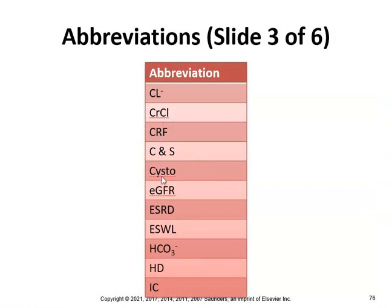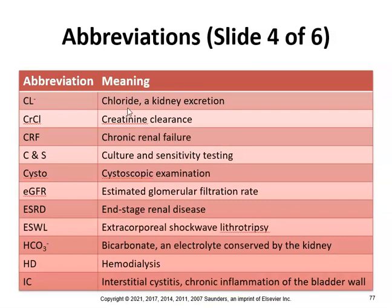More abbreviations: Cl means chloride, a kidney excretion. CrCl is creatinine clearance. CRF is chronic renal failure. C&S is culture and sensitivity testing. Cysto is cystoscopic examination. eGFR is estimated glomerular filtration rate. ESRD is end-stage renal disease. ESWL is extracorporeal shockwave lithotripsy. HCO3 is bicarbonate electrolyte conserved by the kidney. HD is hemodialysis. IC is interstitial cystitis.